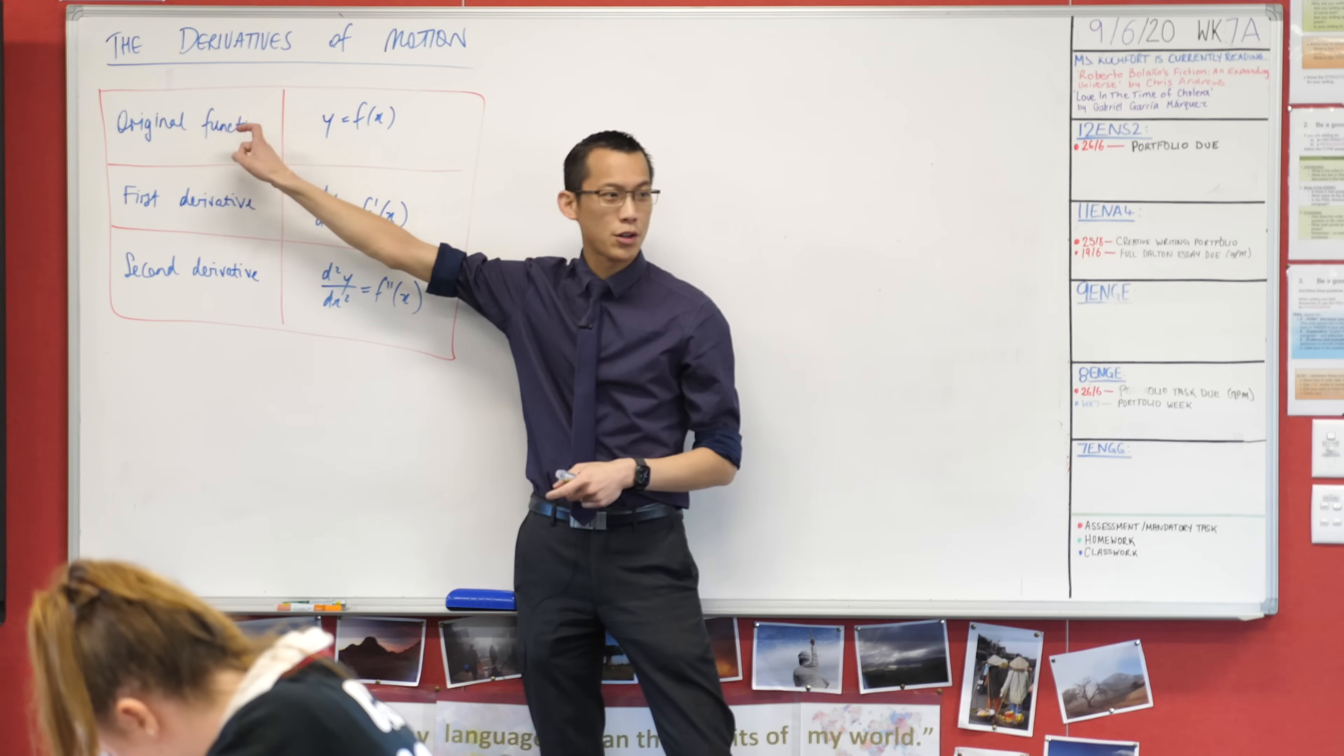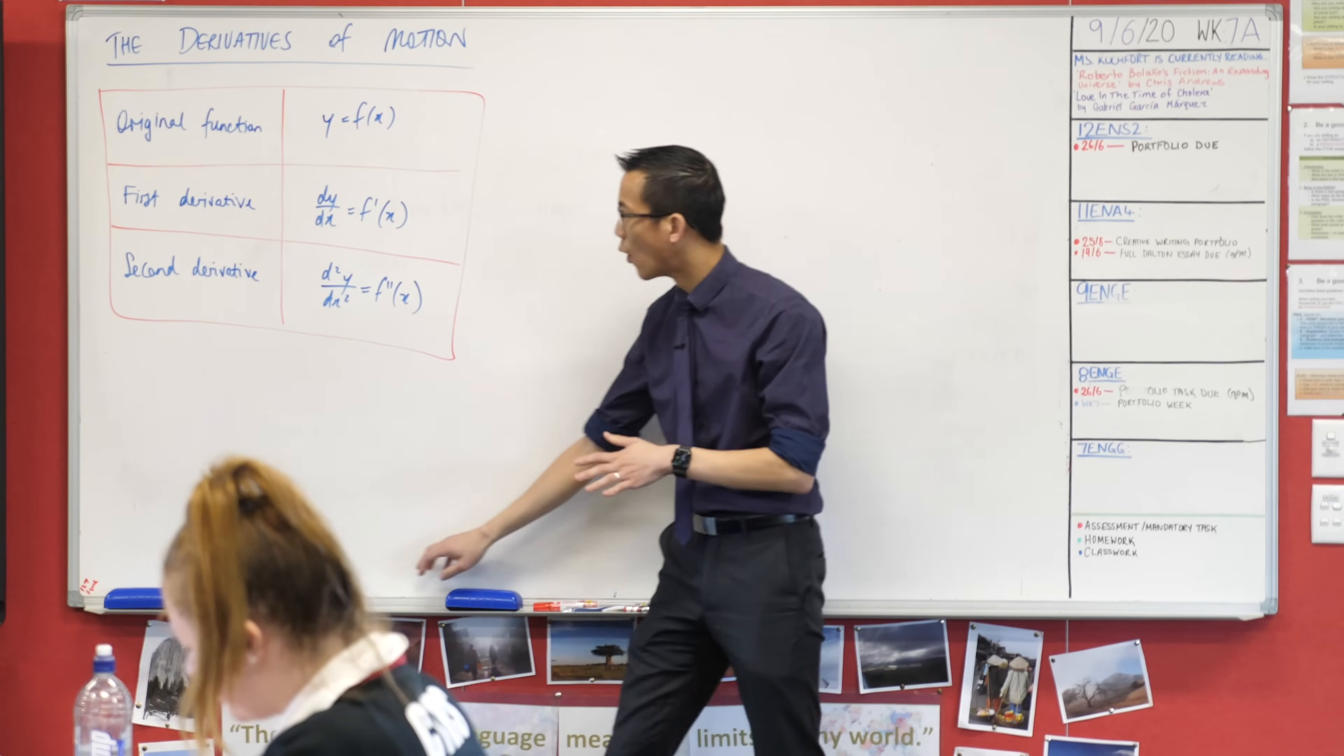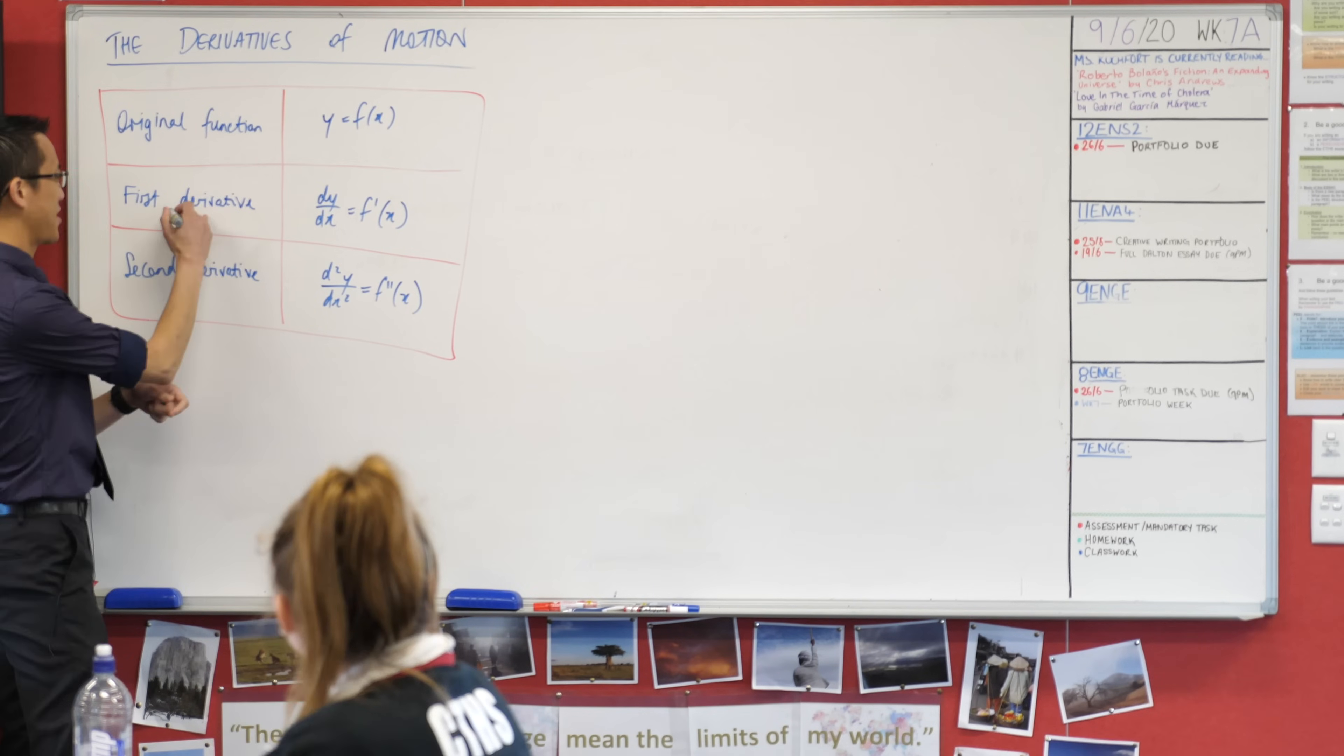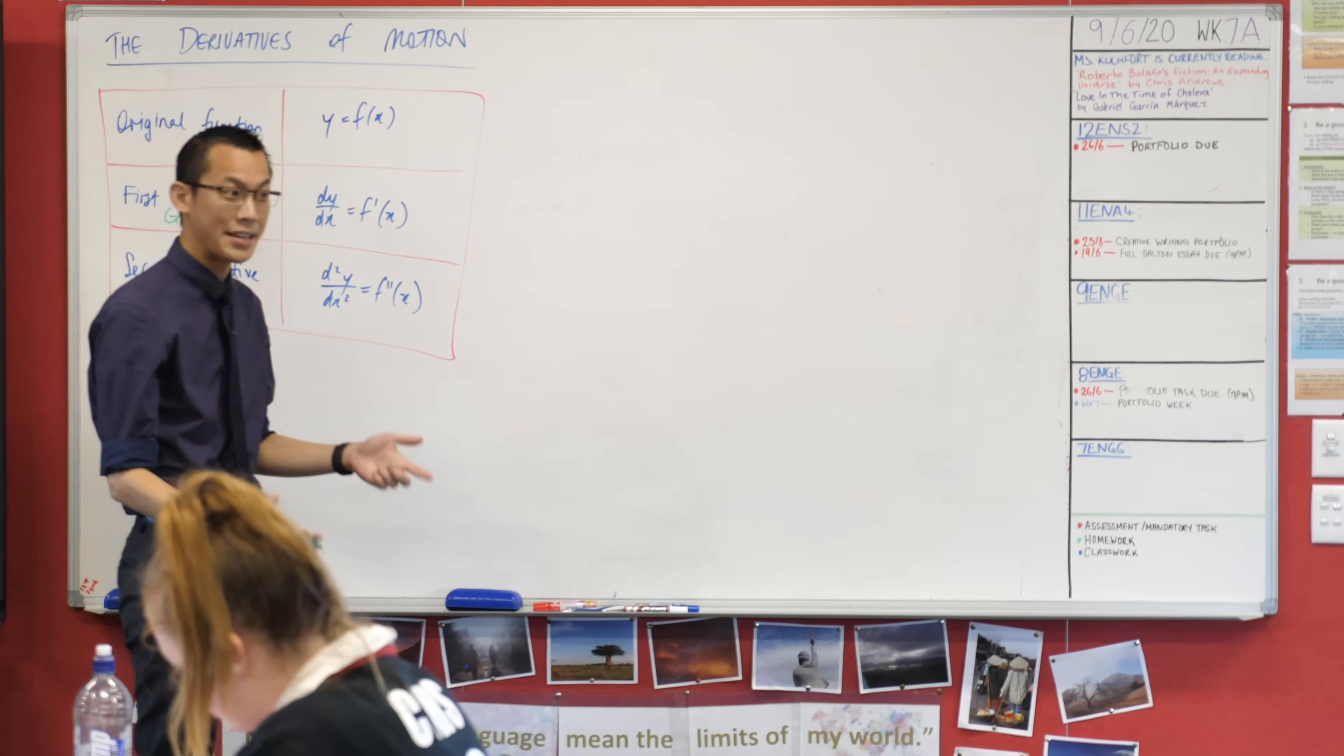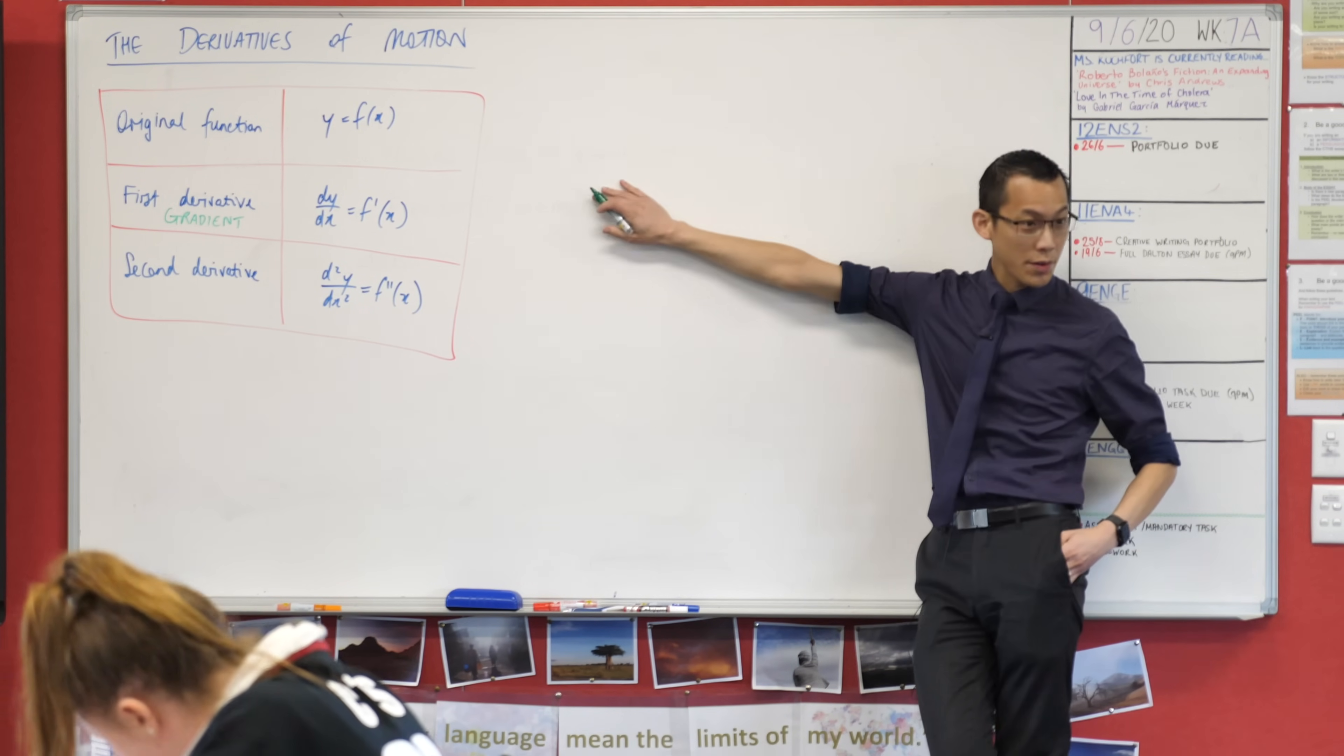Let's remember when you have an original function, you can differentiate it once to get the first derivative. Geometrically, what does the first derivative tell you? What does it tell you about the shape of the graph? It tells you the gradient, right. So this tells me is it going up, is it going down, is it going up steeply or shallowly. First derivative gives you gradient.